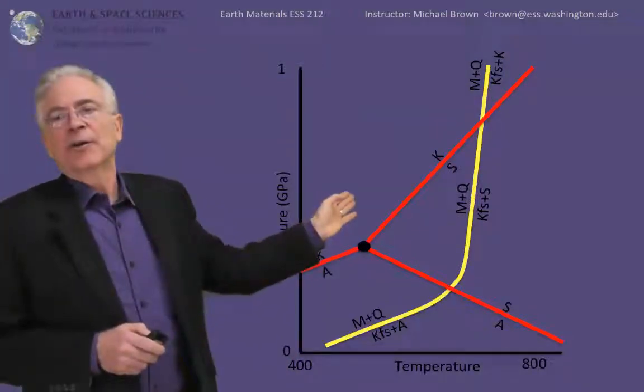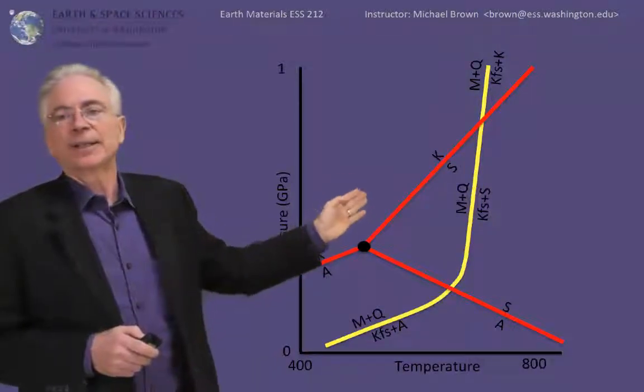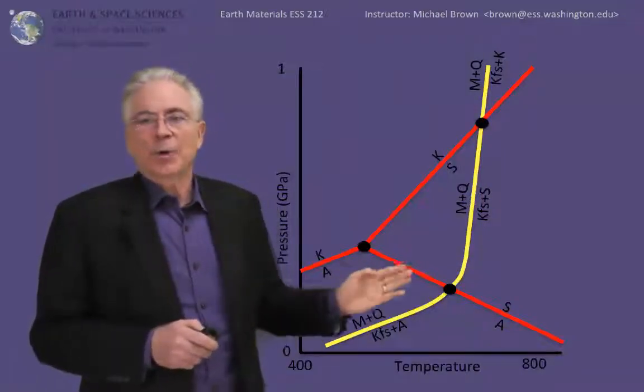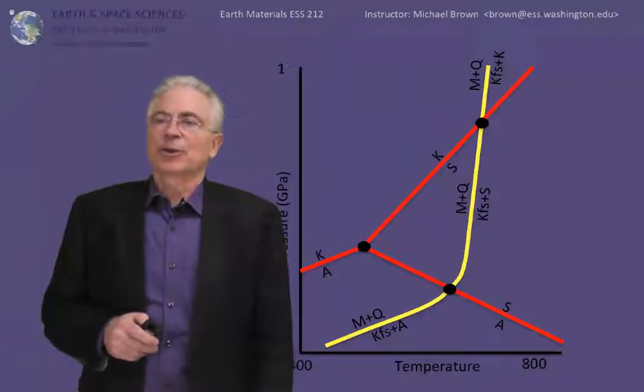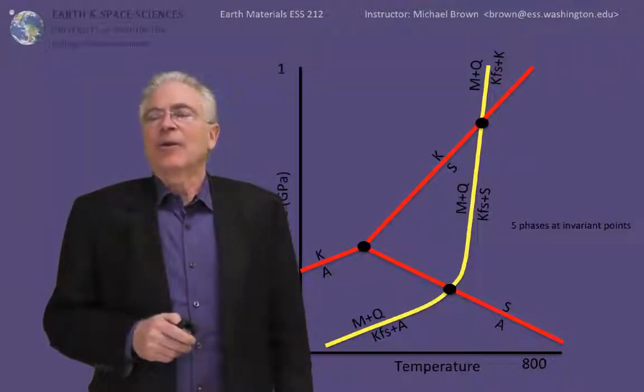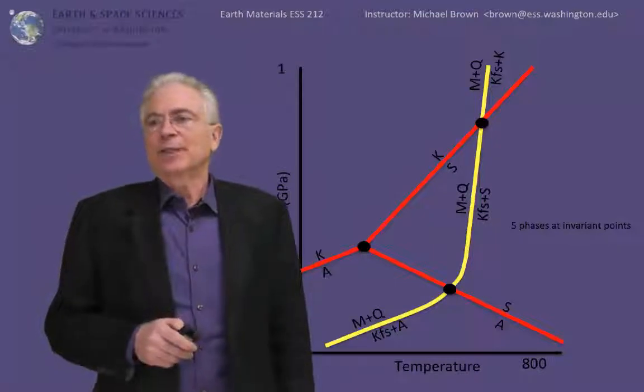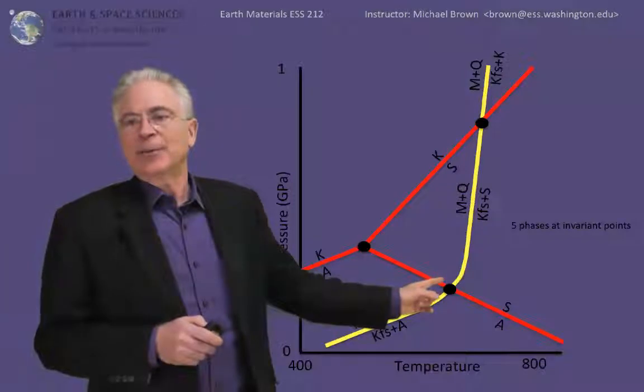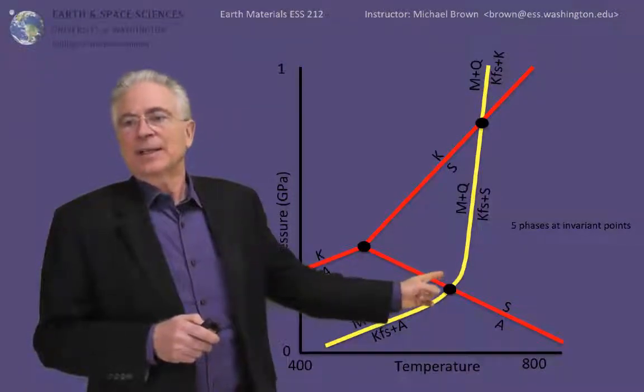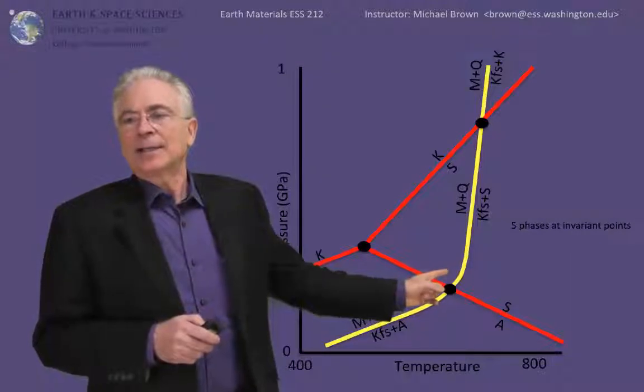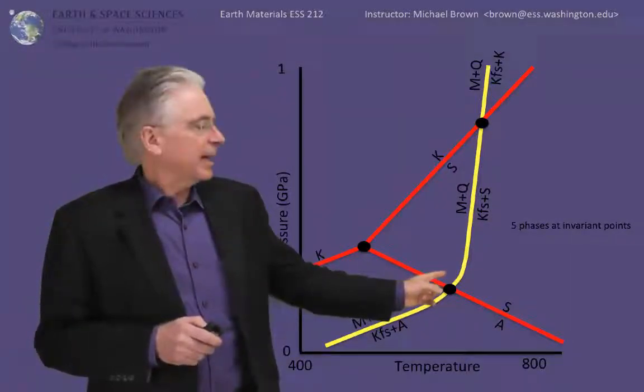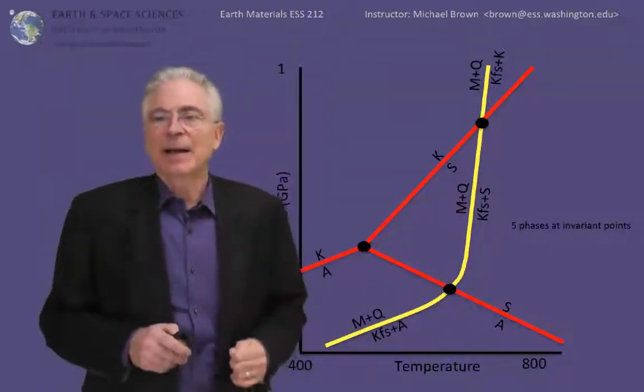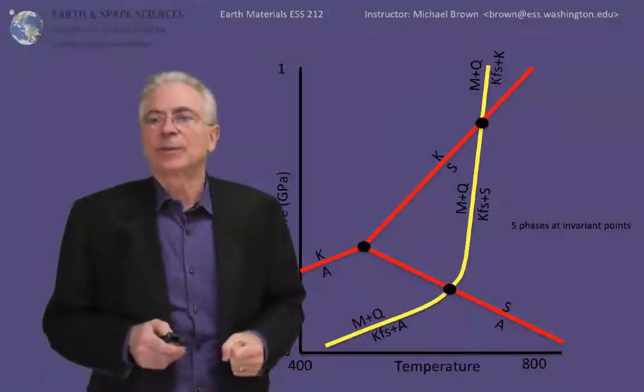Originally, we had for the aluminosilicate phase boundary a single invariant point. Because of the crossings, we have an additional two invariant points, shown with the black circles. Remember from our analysis of the phase rule, we expect five phases at invariant points, and we can count them down here: we have quartz, muscovite, potassium feldspar, and andalusite and sillimanite, all in equilibrium at the lower right phase boundary. Each of the phase invariant points will have five phases in equilibrium.